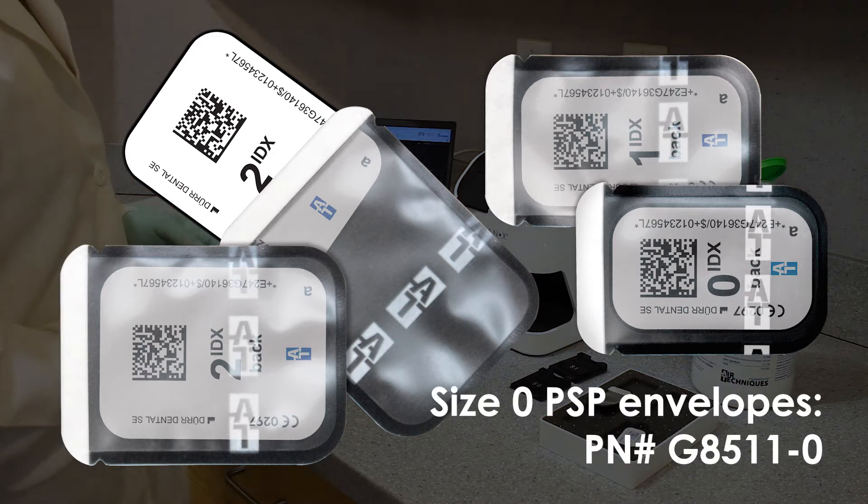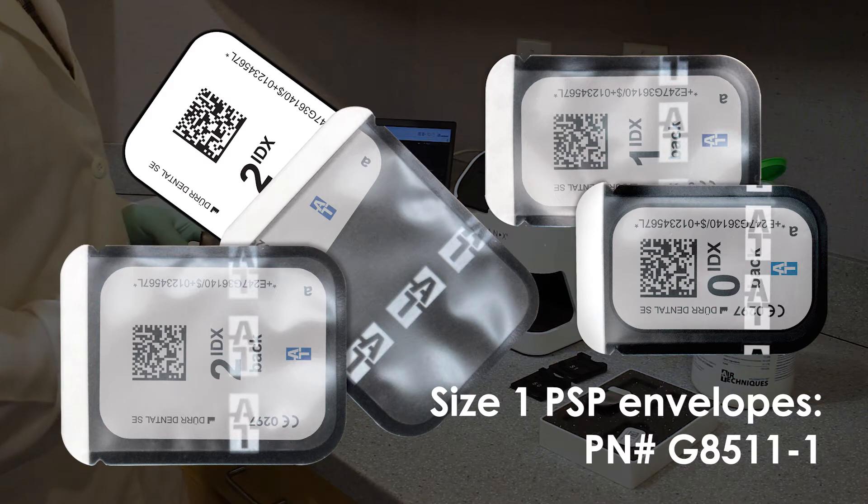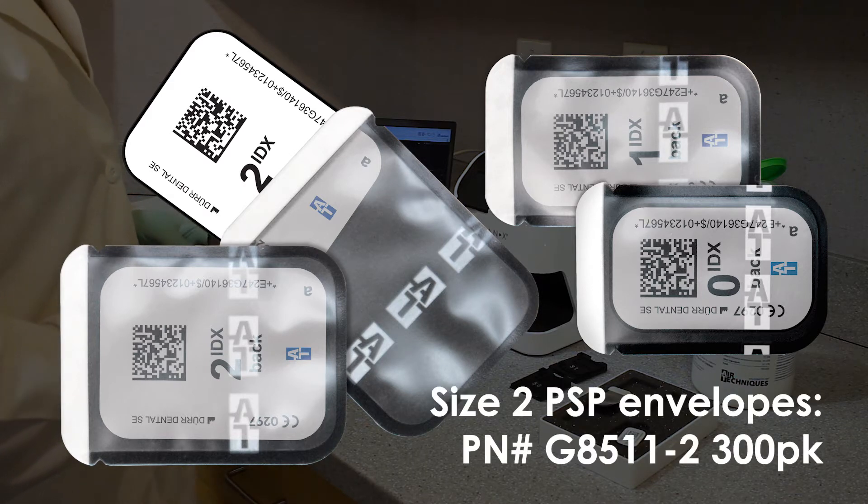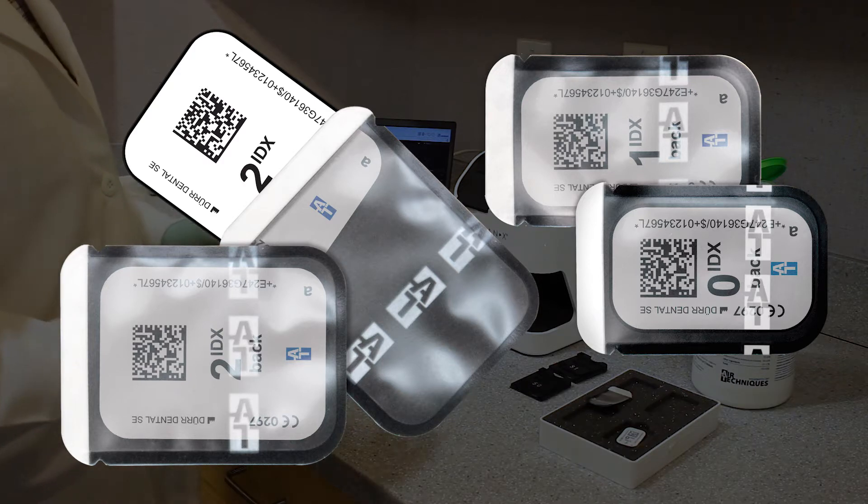The size 0 is going to be G8511-0. Size number 1 is G8511-1. And size number 2 is available in two separate part numbers. G8511-2 is the standard 300 pack, and G8511-2K would be the more economical 1,000 package of size 2 barrier envelopes.